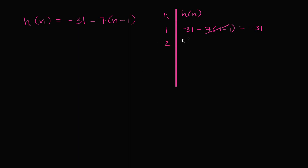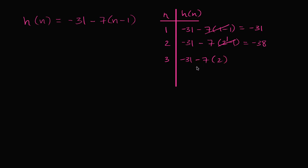When n is equal to two, it's going to be negative 31 minus seven times two minus one — two minus one is just one — so it's negative 31 minus seven, which is equal to negative 38. When n is equal to three, it's negative 31 minus seven times three minus one, which is two. So we subtract seven twice: negative 31 minus 14, which is equal to negative 45.